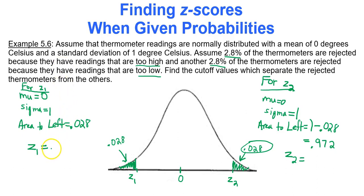So Z sub 1 is negative 1.91, that's your lower cutoff value. And Z sub 2 is positive 1.91, that's your upper cutoff value.